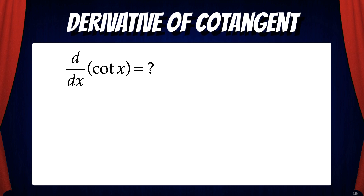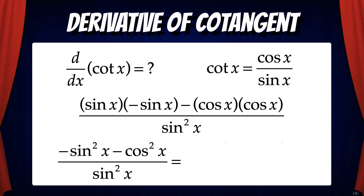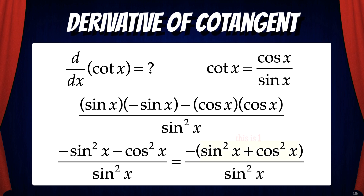Let's keep going. We're going to use a similar strategy to find the derivative of cotan x. Let's start by rewriting cotan x as cosine x over sine x. Then we'll use the quotient rule. We'll take the low function, sine x, times the derivative of the high function, which gives us negative sine x, minus the high function, cosine x, times the derivative of the low function, which also gives us cosine x, all over sine squared x. Then we'll simplify the numerator and we get negative sine squared x minus cosine squared x.